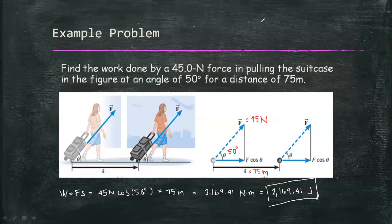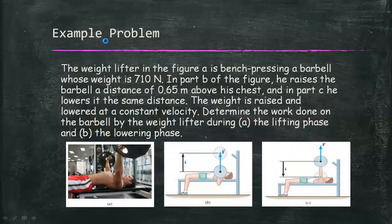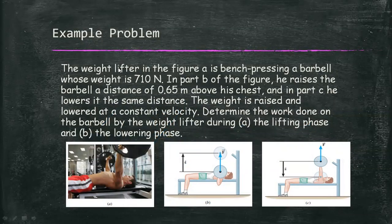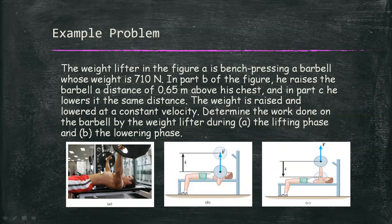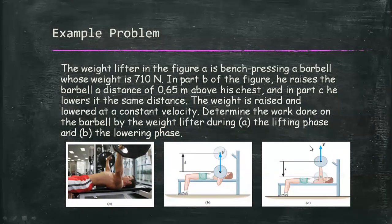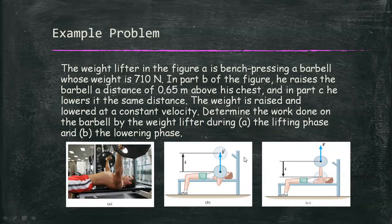Next, another problem. The weight lifter in figure A is bench pressing a barbell whose weight is 700 newton. In part B of the figure, he raises the barbell a distance of 0.65 meter above his chest, and in part C he lowers it at the same distance. The weight is raised and lowered at a constant velocity. Determine the work done on the barbell by the weight lifter during A, the lifting phase, and B, the lowering phase.